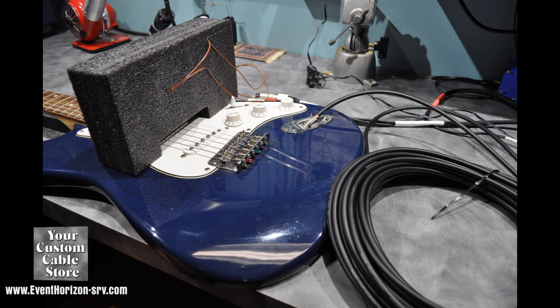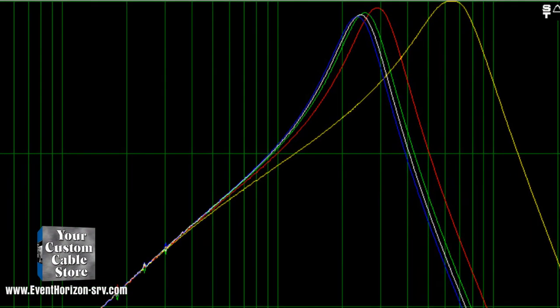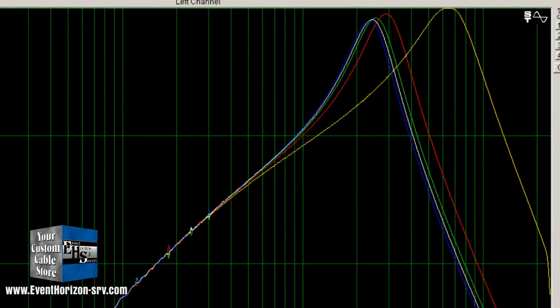So here are the results. This one has a baseline test. The yellow line is one foot of 2524. From there the red line is 50 feet of 2549 with low to ground. The green line is 2524. The white line is snake wire with low tied to ground and the blue line is 2319. Those fall all in order of lowest capacitance to highest capacitance.